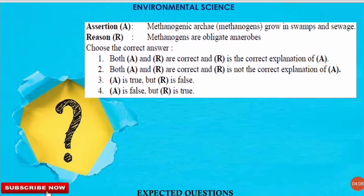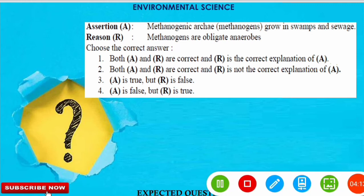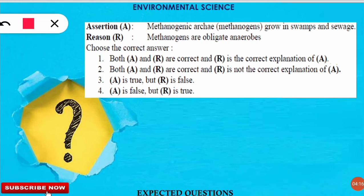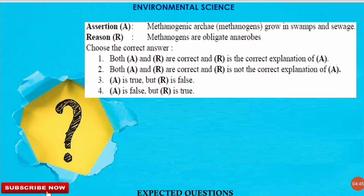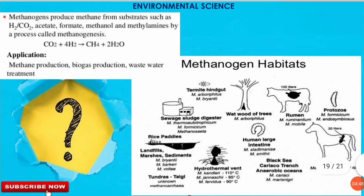The next question is an assertion and reasoning type. The assertion states that methanogens grow in swamps and sewage, while the reason states that methanogens are obligate anaerobes. The correct option is option A — both are correct. Methanogens do grow in swamps and sewage, and they are obligate anaerobes, meaning they are permanently anaerobic and not facultative anaerobes.